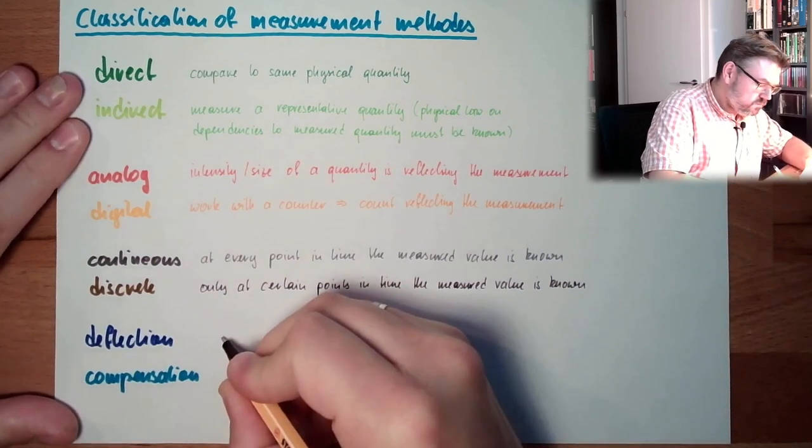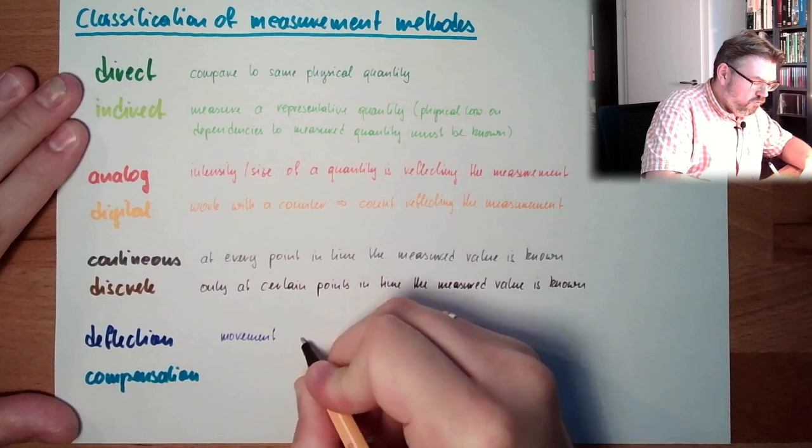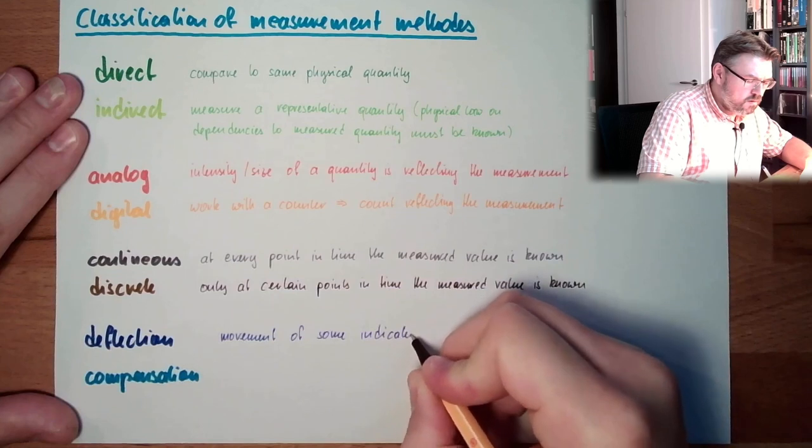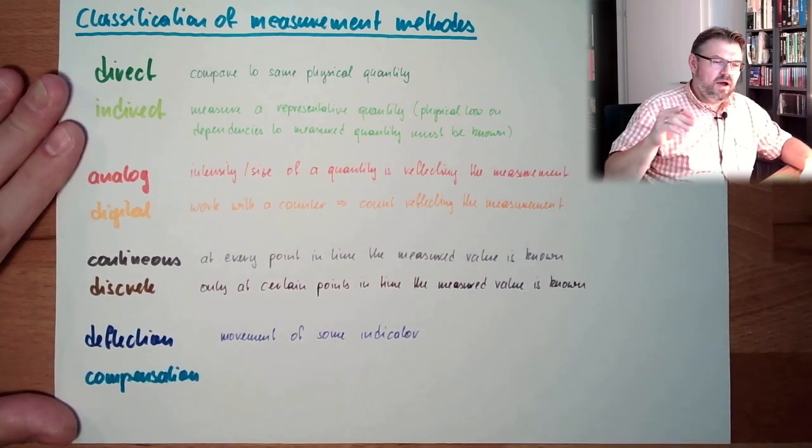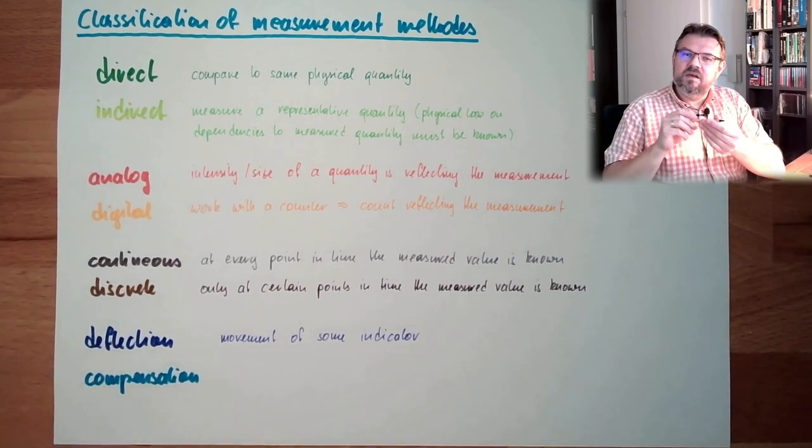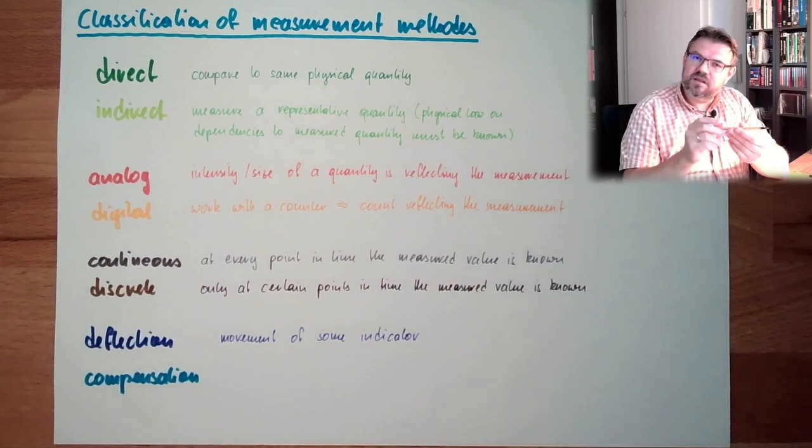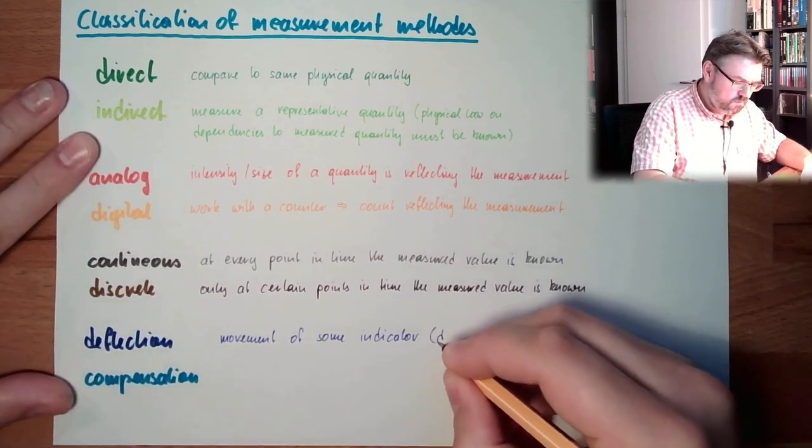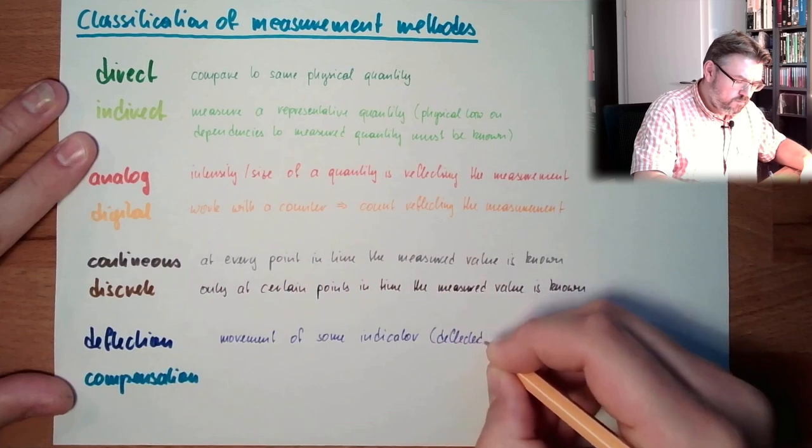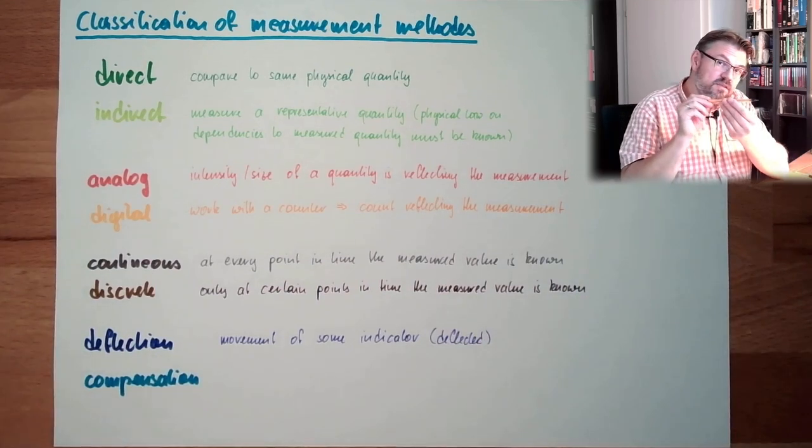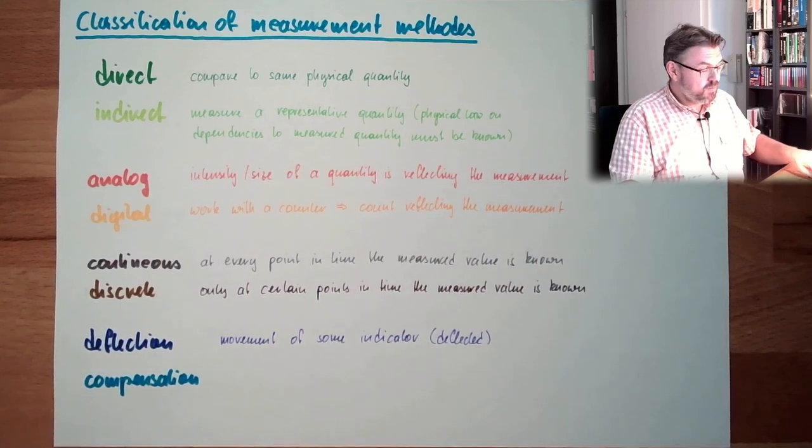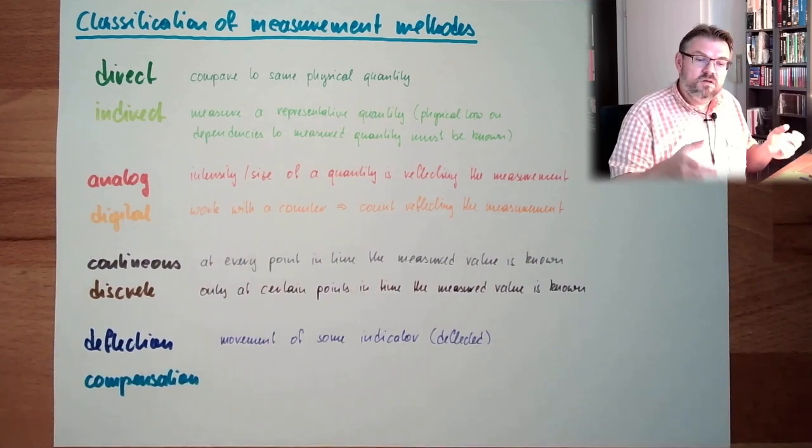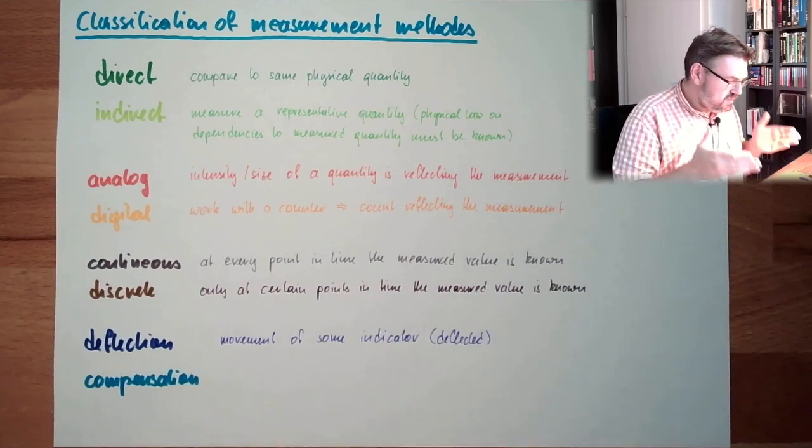So in deflection method, I am pushing something, pulling something, moving something. Deflect something. And this is representing the value. So deflection will be movement of some indicator. By the way, it must not be an indicator. It might be a coil somewhere in a position measurement. Then this would be electrical. However, the coil is moved. Deflected.